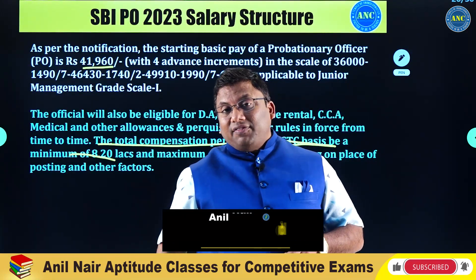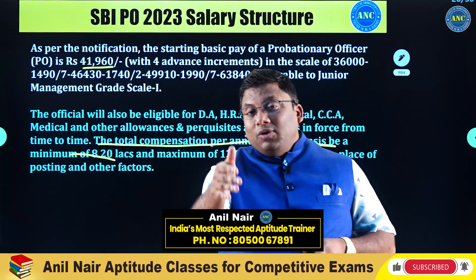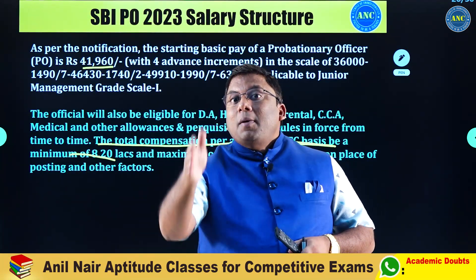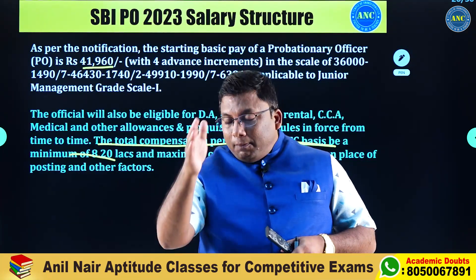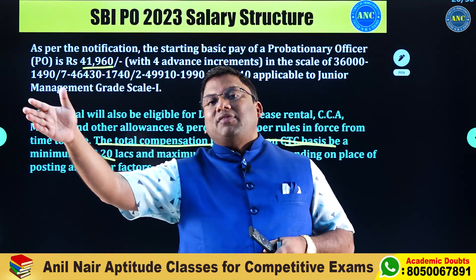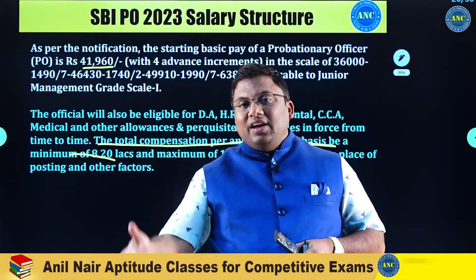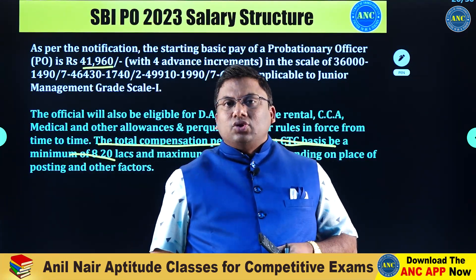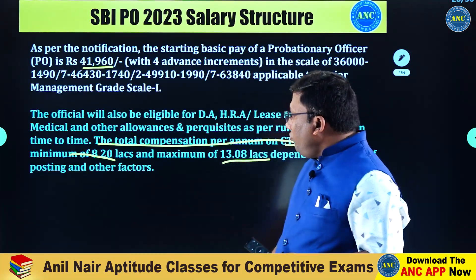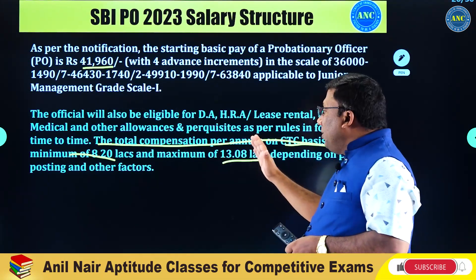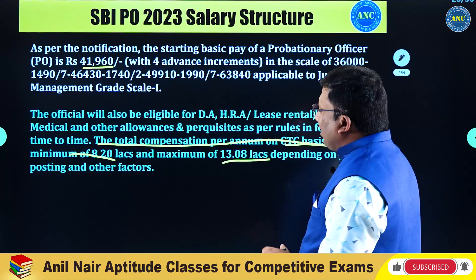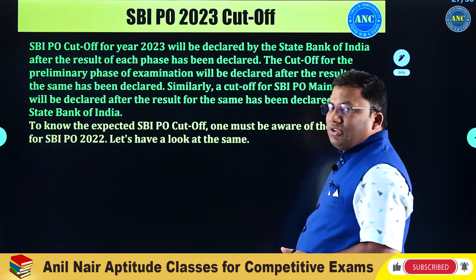Please understand, my dear friends — at the age of 21 plus, you are getting a government job as a probationary officer. A probationary officer in a village can alter the employment of that particular village by giving a lot of financial aid, depending upon their financial strengths. The minimum CTC is 8.22 lakhs and maximum is 13.08 lakhs depending upon place of posting.